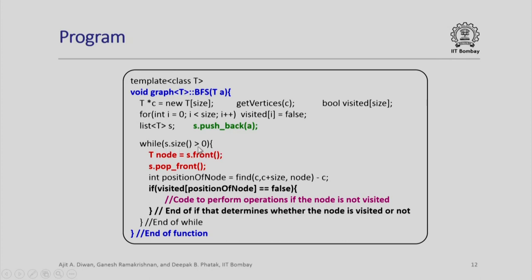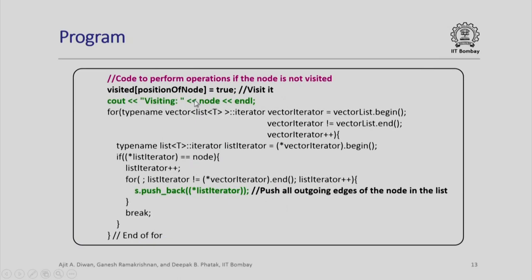While size is greater than zero, we now do two things differently. First, we get the node from s dot front and second, we pop front. This is the only difference that we have from the earlier algorithm. After we do this, if the visited is false, we still have to write code to perform operations if the node is not visited. So, let us look at this code. In this code, we are doing exactly the same thing that we did earlier. The push back will automatically do the same pushing back that we had done earlier, pushing all the outgoing edges of the node in the list.